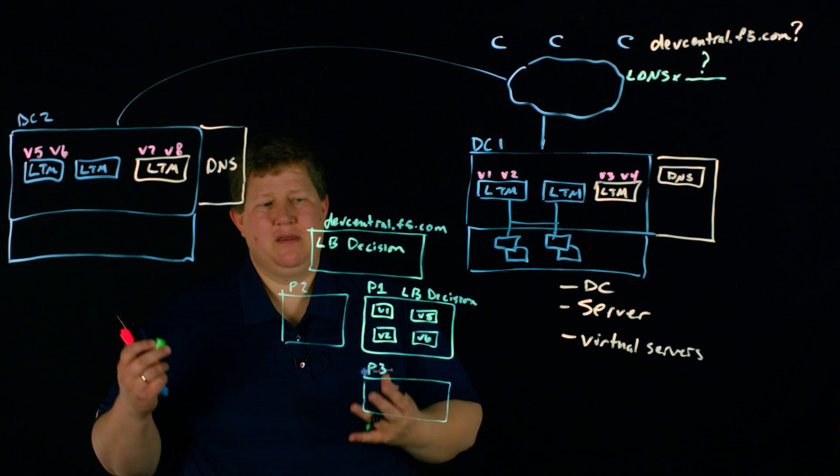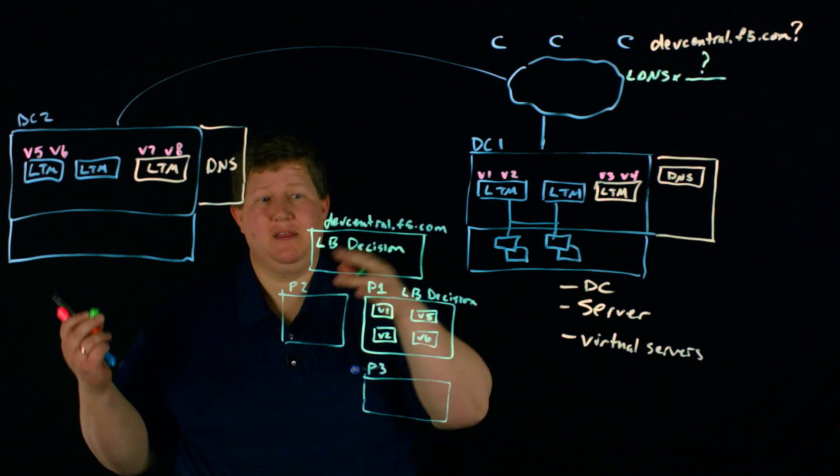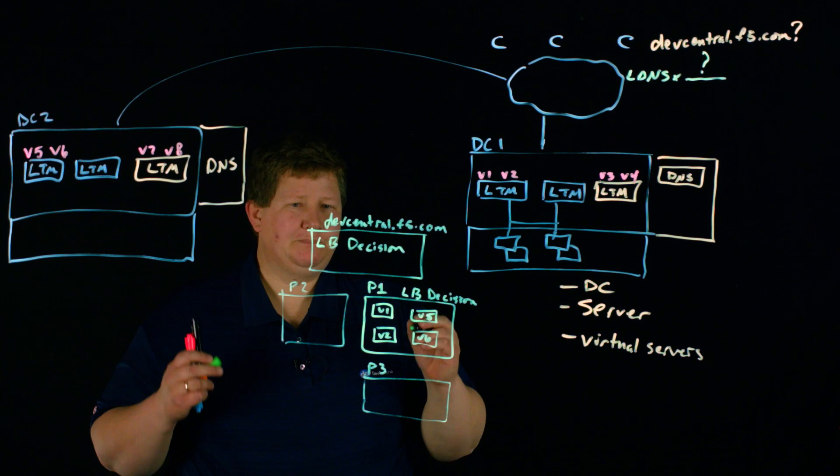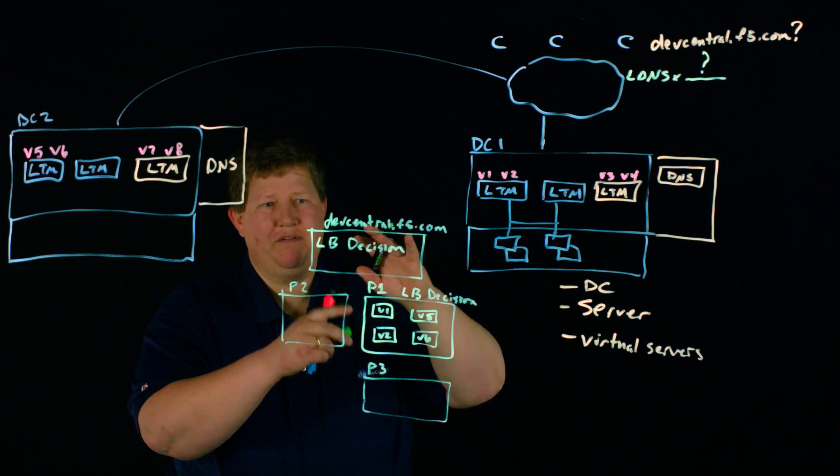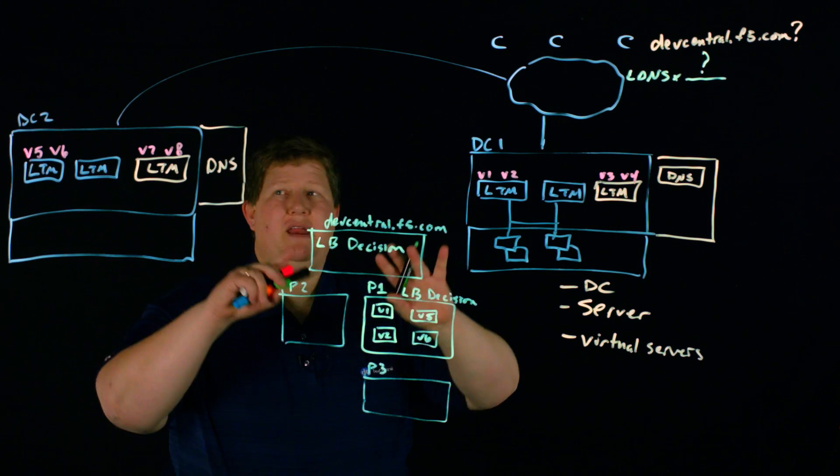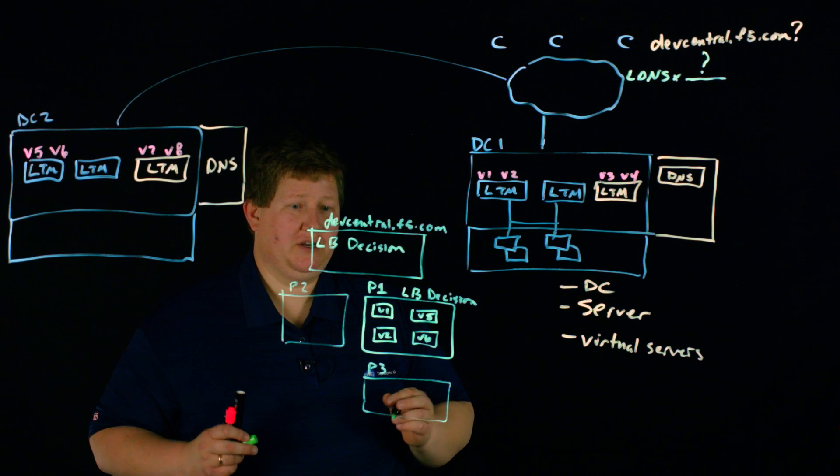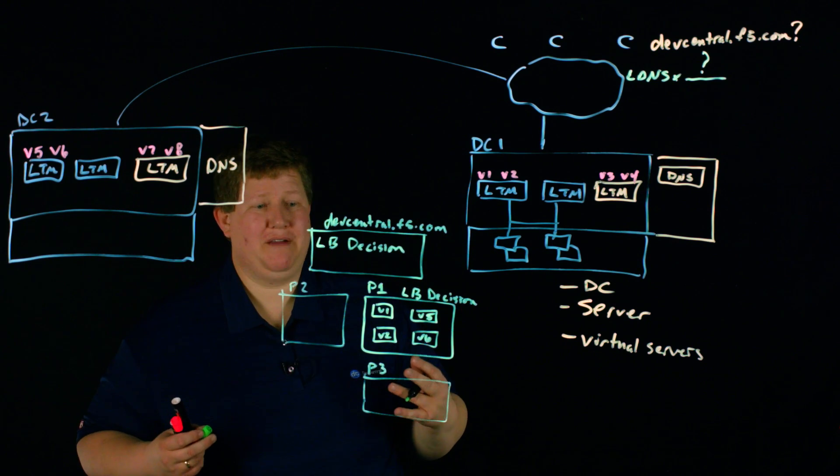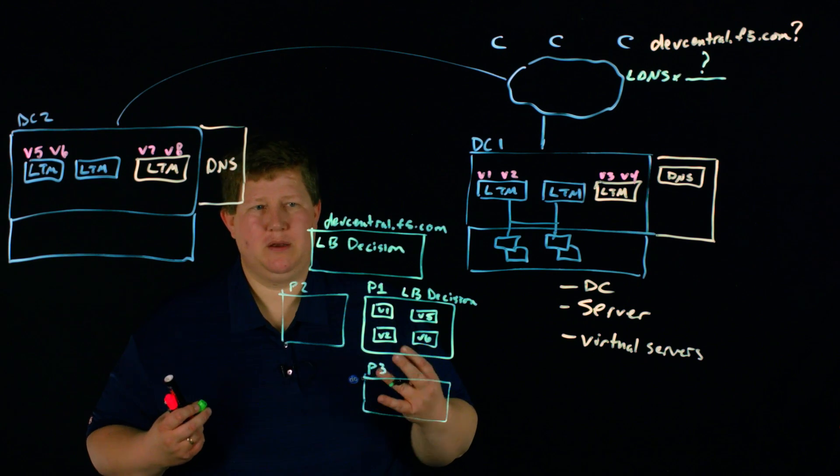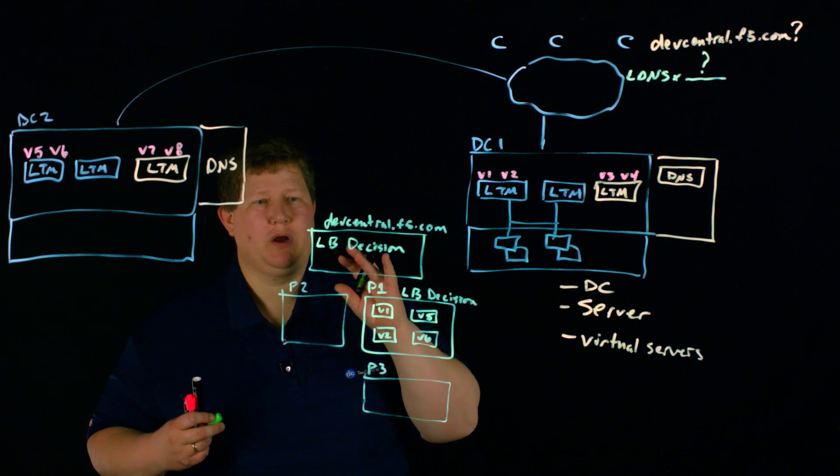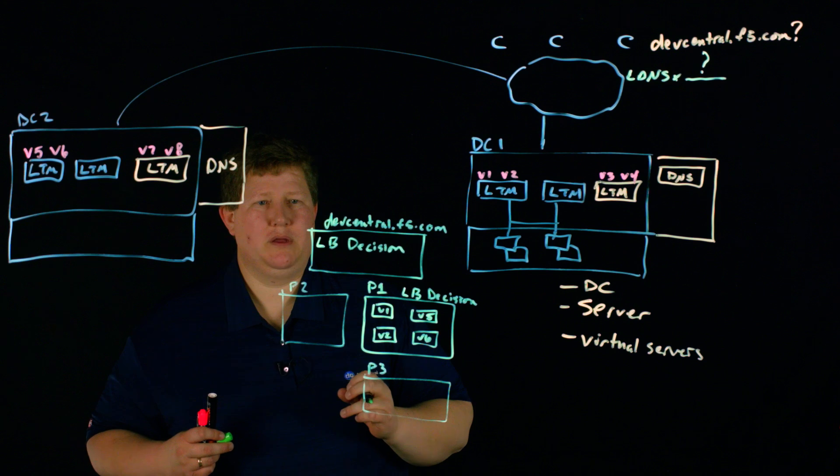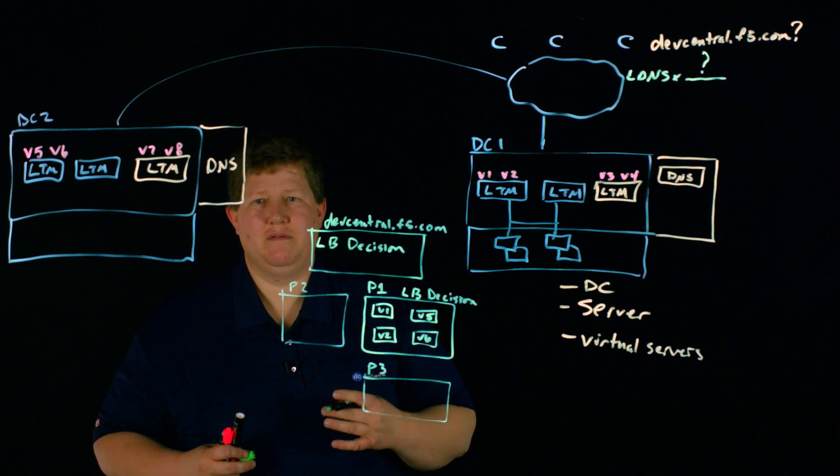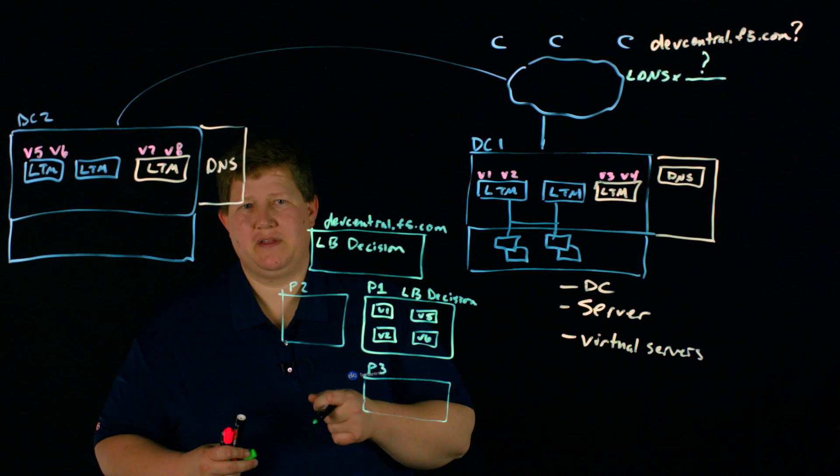And so that's the basics before we get into the LB decisions themselves on the tiering of how those decisions are made and how the overall architecture of the infrastructure works when it comes to global traffic management. Hopefully this has been helpful, and we are going to get into the load balancing algorithms in our next set of videos. Thanks a lot, and we'll see you out there in the community.